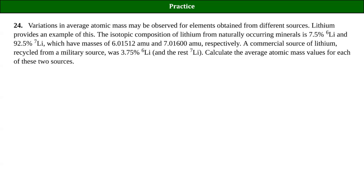Lithium is used in military applications as part of thermonuclear weapons — fusion bombs use lithium as part of their fuel source, lithium-7 specifically. So here is a specific source where you have half the amount of lithium-6. What's the atomic mass going to be for that source? We put the percentage times the mass: our generic form is mole fraction of an isotope times the mass of that isotope, and then we just add them all up. If we only have two isotopes, this is really straightforward.